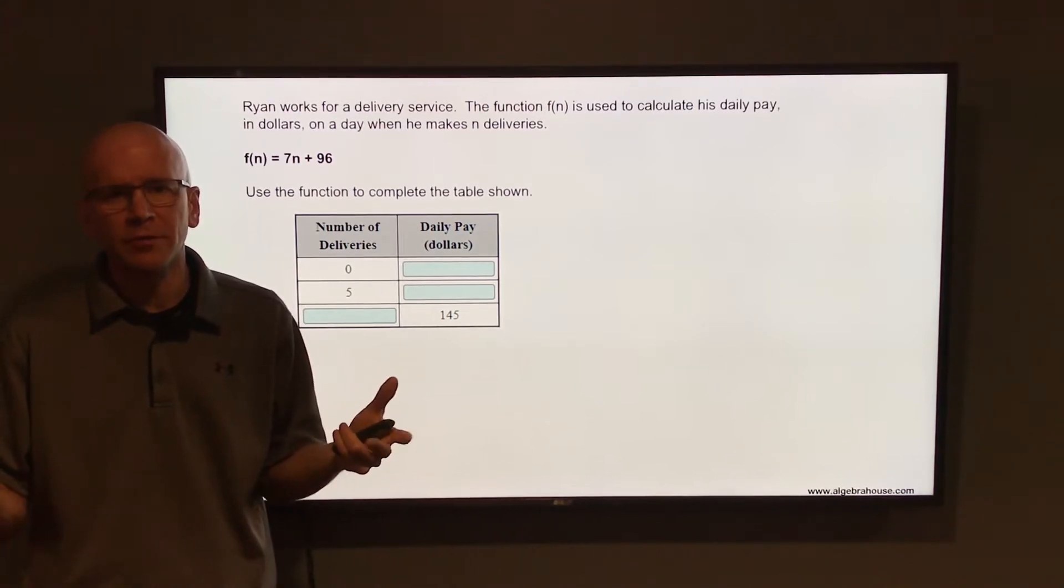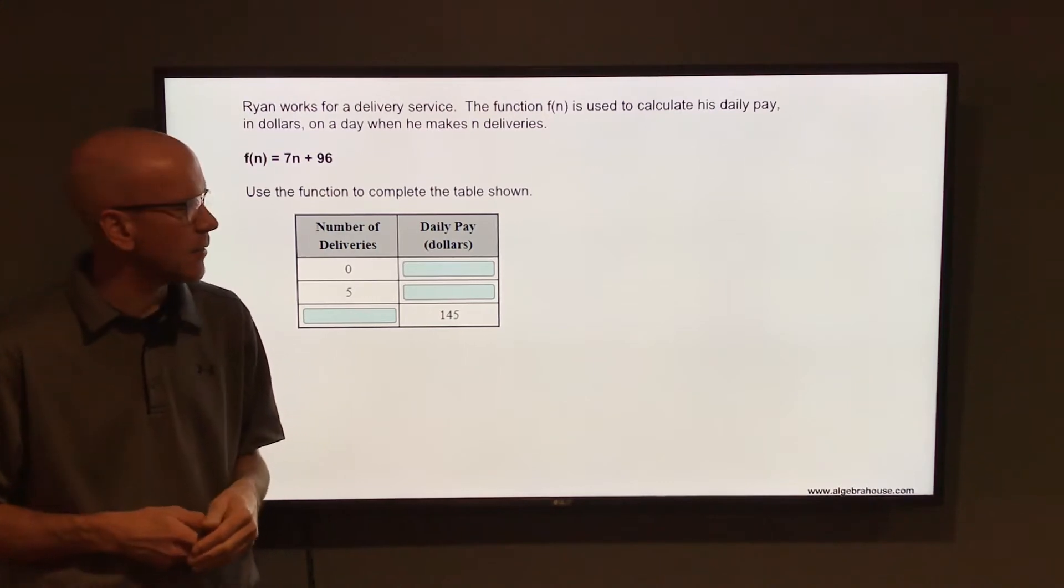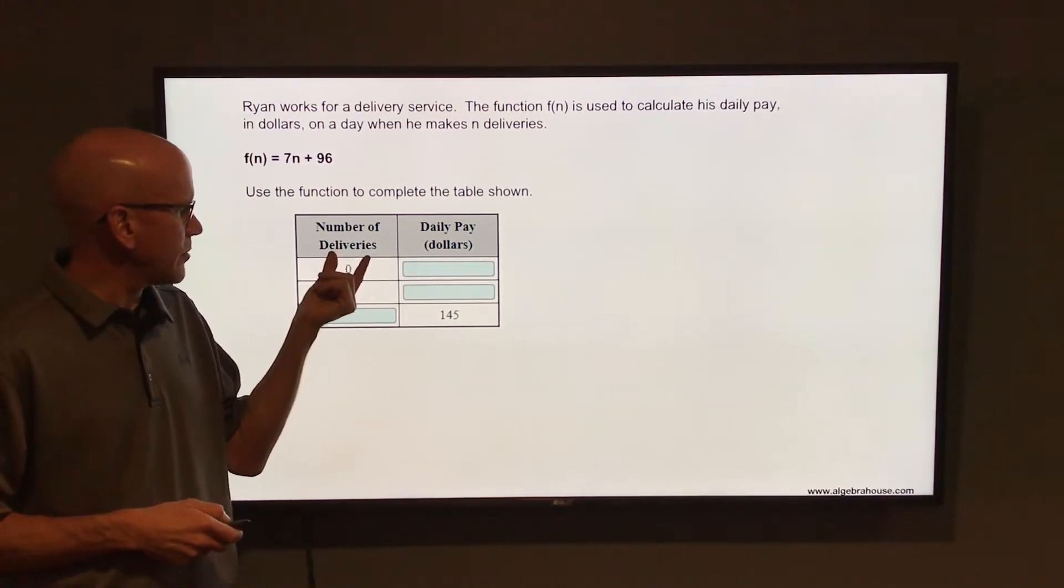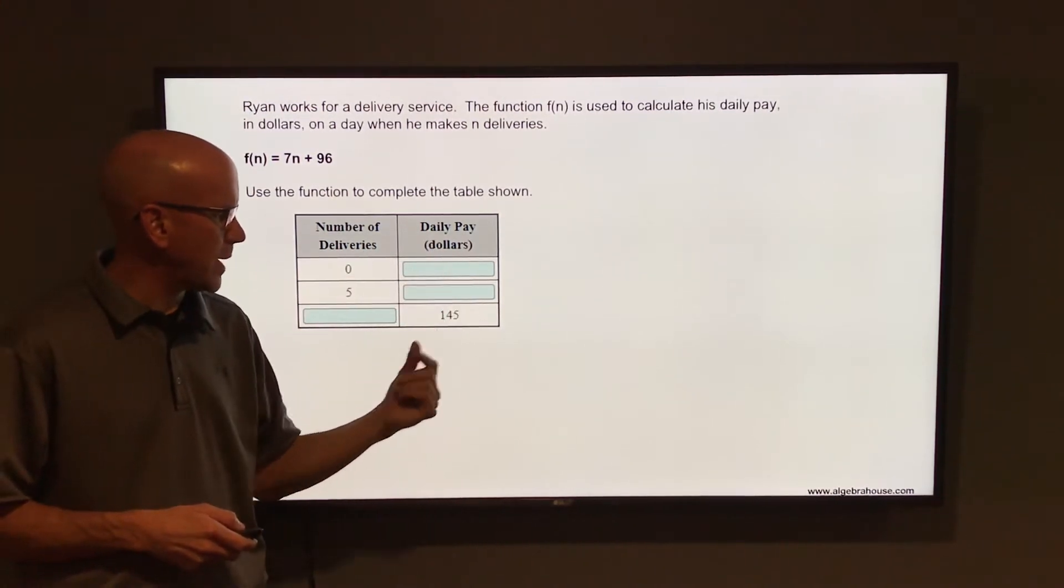So if he makes 100 deliveries he's gonna get 96 dollars, or if he makes zero deliveries he's still going to make that 96 dollars. So here we have the number of deliveries and the daily pay that he makes.